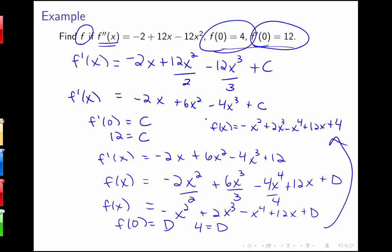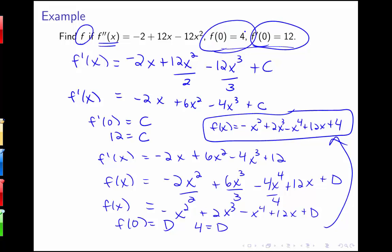The fact that the right-hand side value ended up being our constant was because the rest of the terms went to 0 when we plugged in that value. That sometimes happens, but doesn't always have to. So we'll want to look at a few more examples.